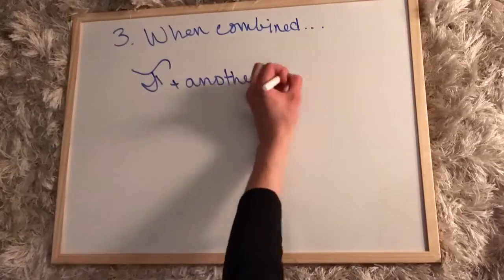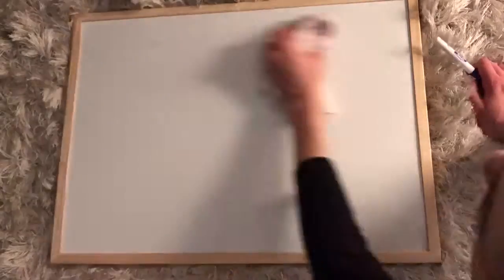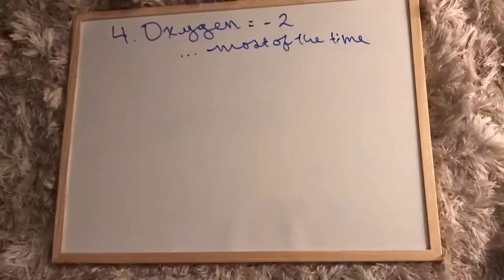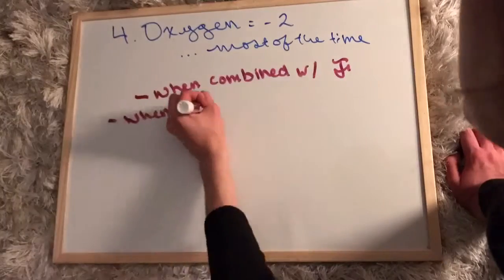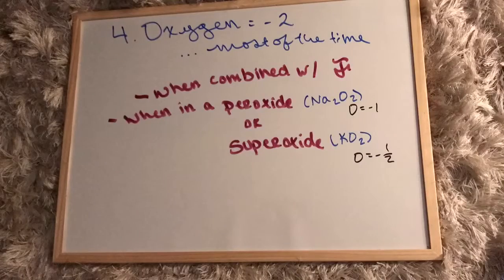Rule number three is that when fluorine is combined with any other element, its oxidation number is negative one. Rule number four is that oxygen is negative two, unless it's combined with fluorine or in a peroxide or superoxide, as shown on your screen right now.